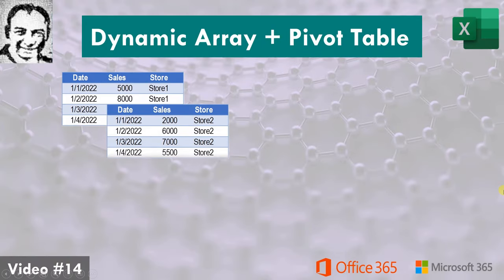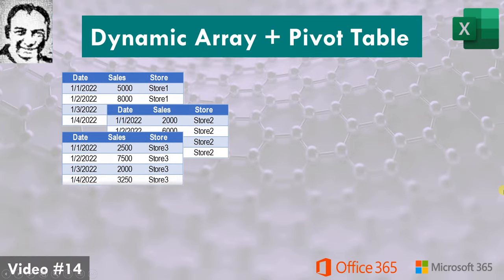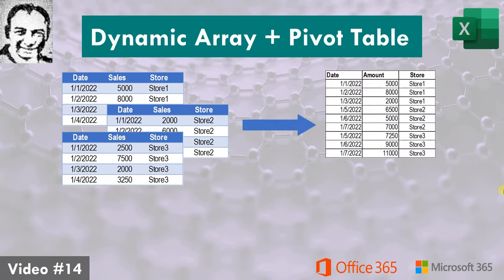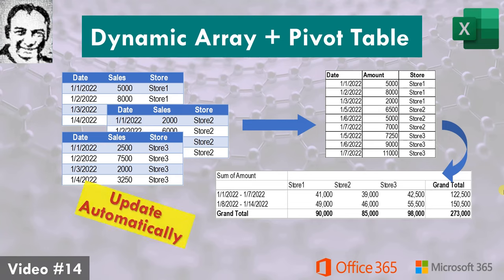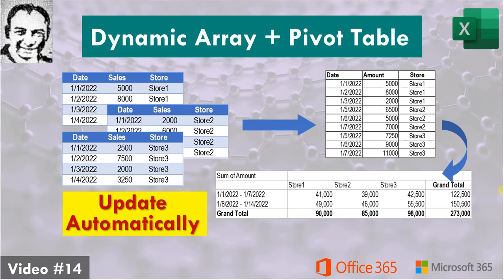We have three tables containing the daily sales of three stores: store 1, 2, and 3. We need to consolidate all of them using dynamic array functions inside one table. Then we are going to create a pivot table to report the weekly sales of the three stores together. When we get new data inside the original tables, the pivot table will be updated automatically once we refresh.